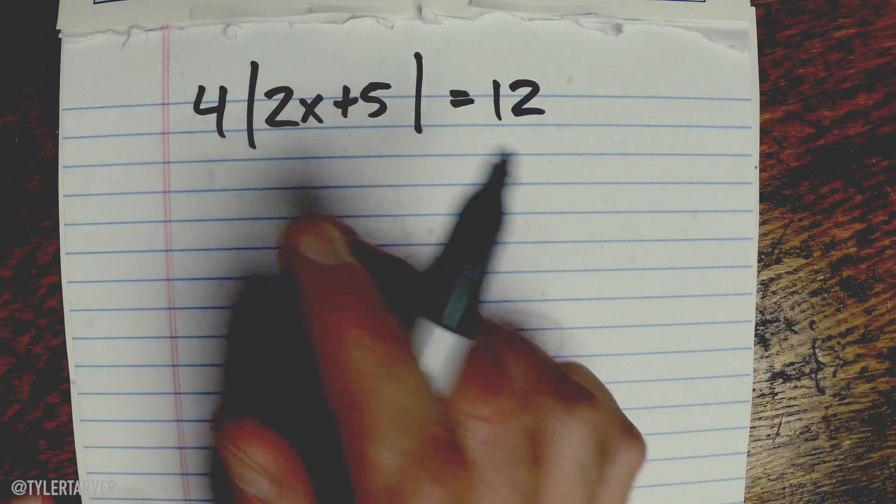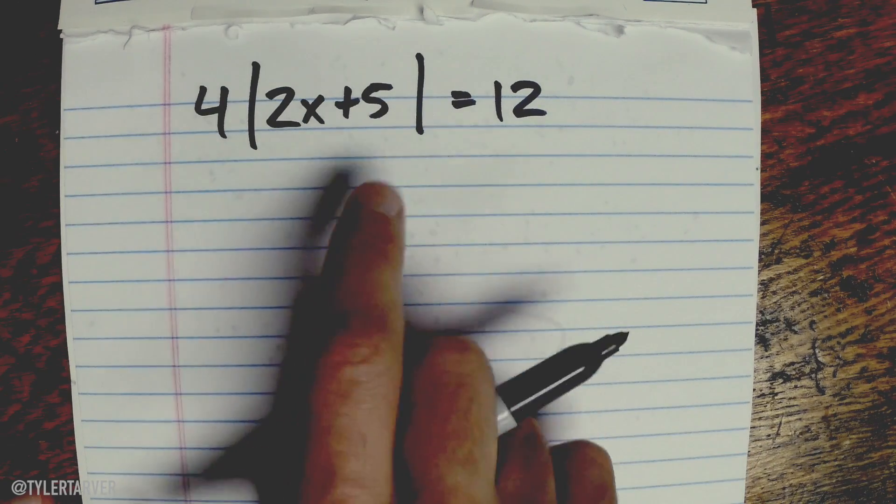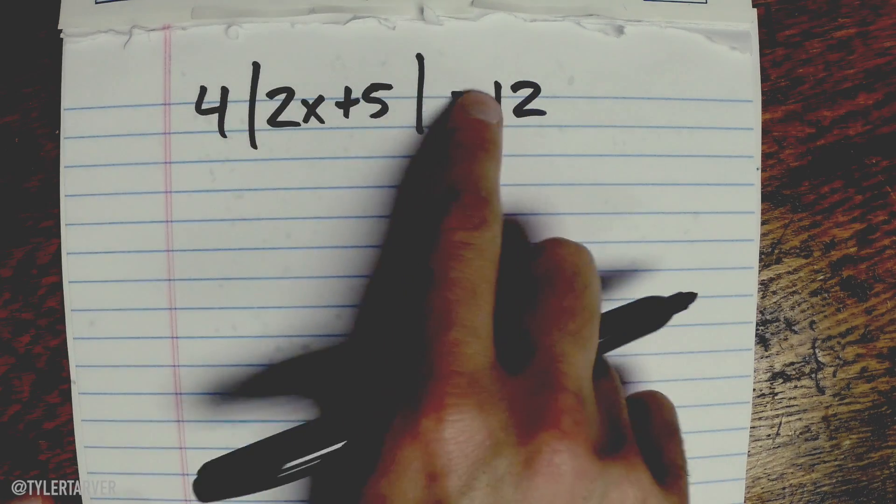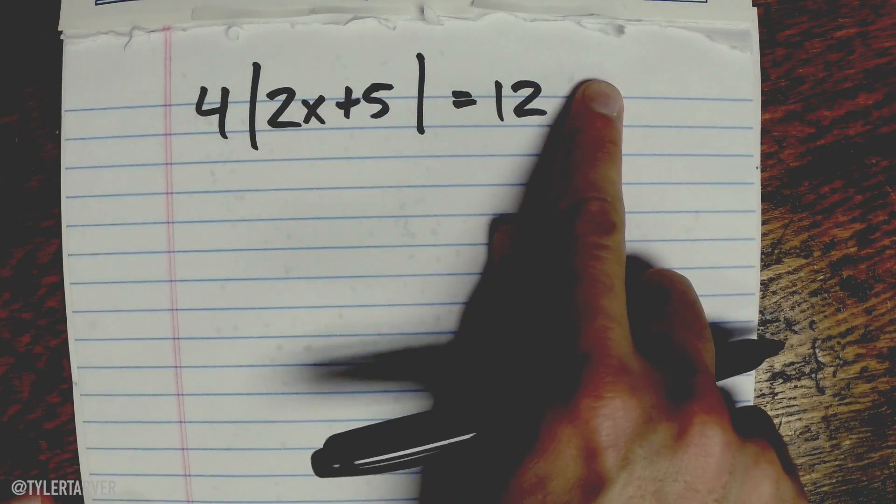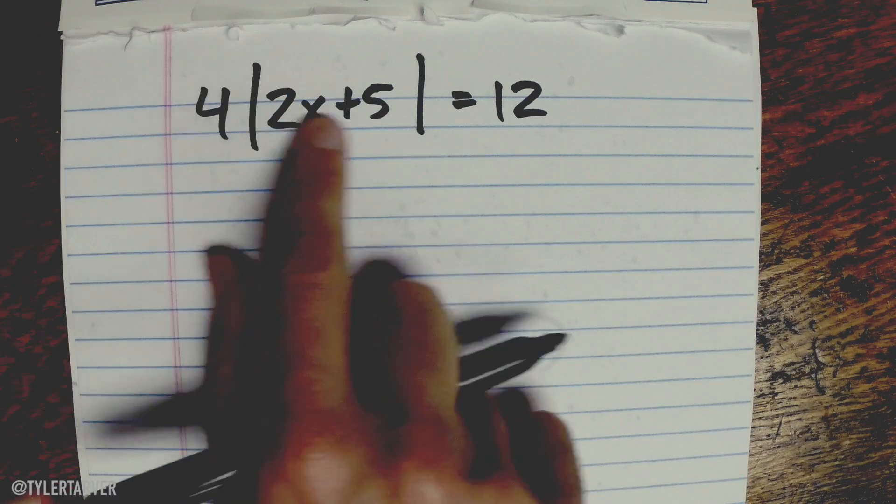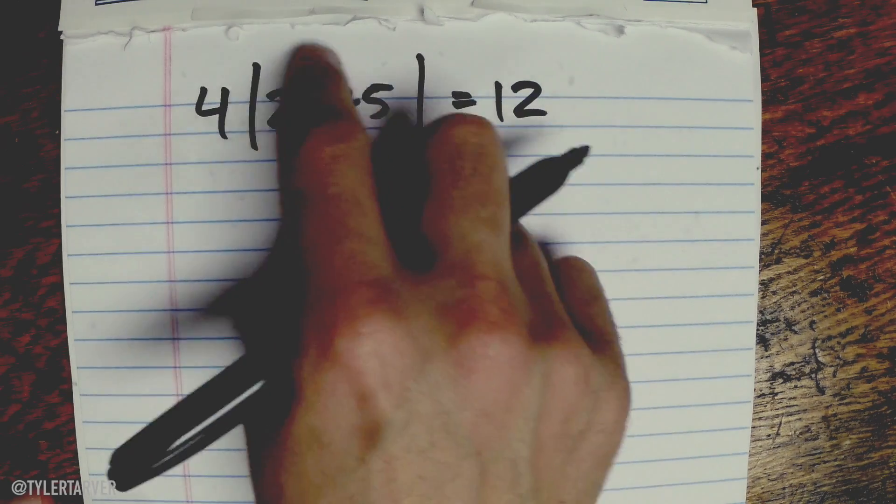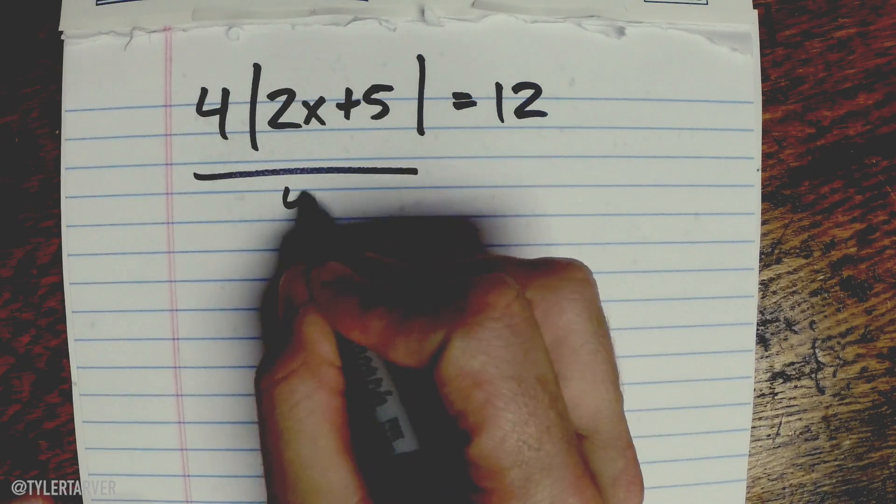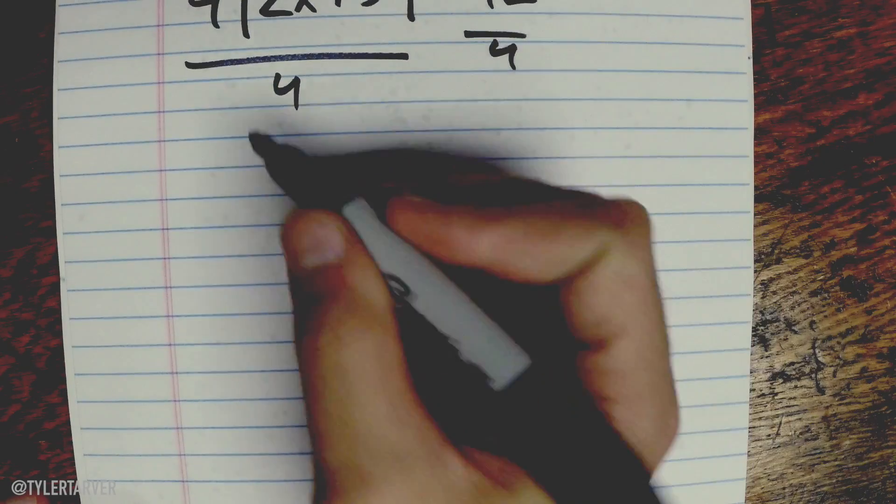It means starting from the bottom. First thing we do is we got to isolate the absolute value on one side of the equal sign, so that means I got to get the four over here. Right now it's four times this, so you want to picture it almost like parentheses. The trick is to divide by four both sides - that would cancel out.